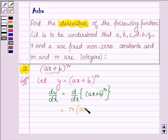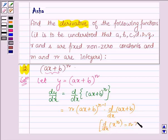N times (AX + B) raised to the power N minus 1 times the derivative of (AX + B). Since the derivative of a function X raised to the power N with respect to X is N times X raised to the power N minus 1.